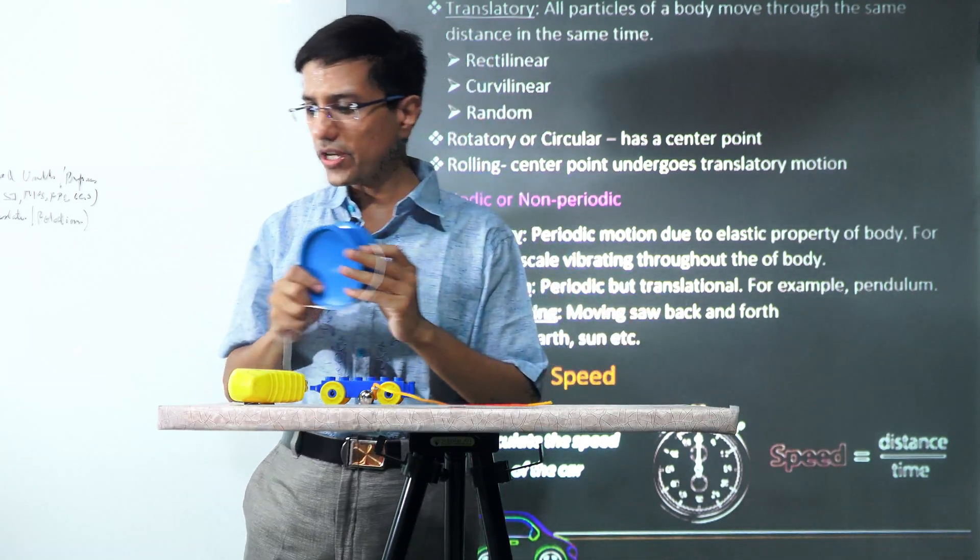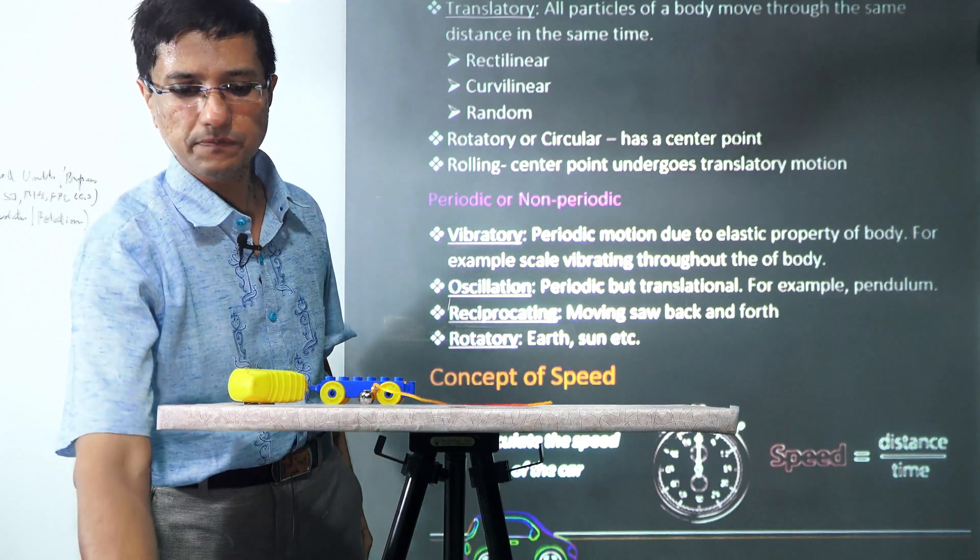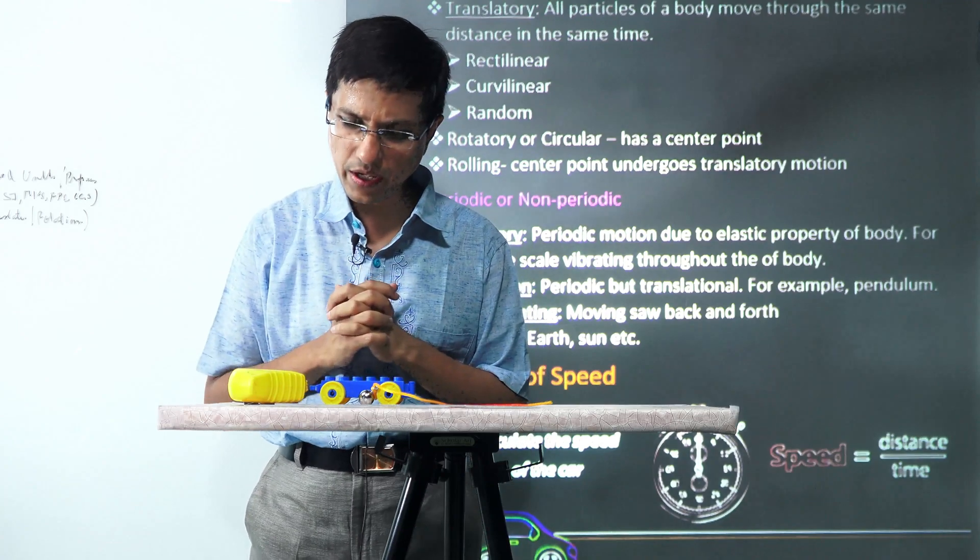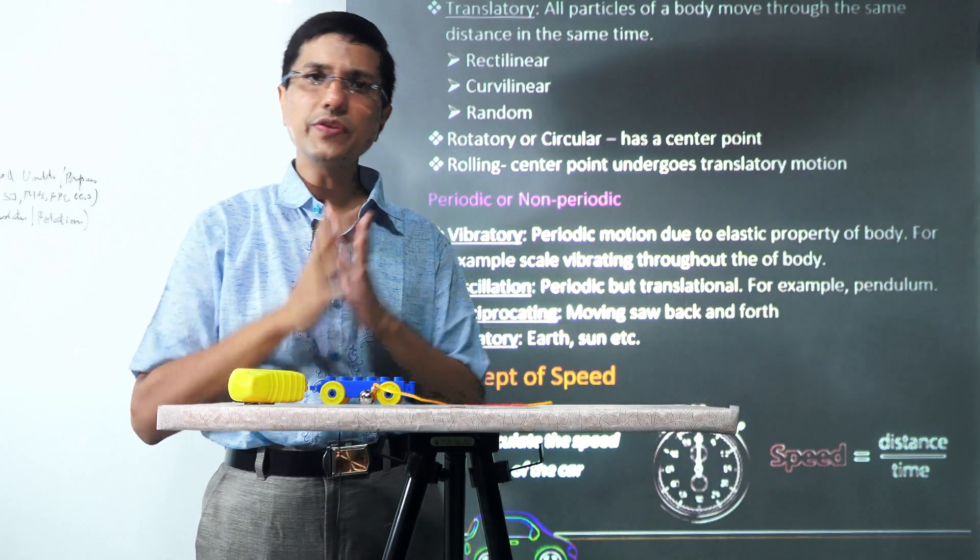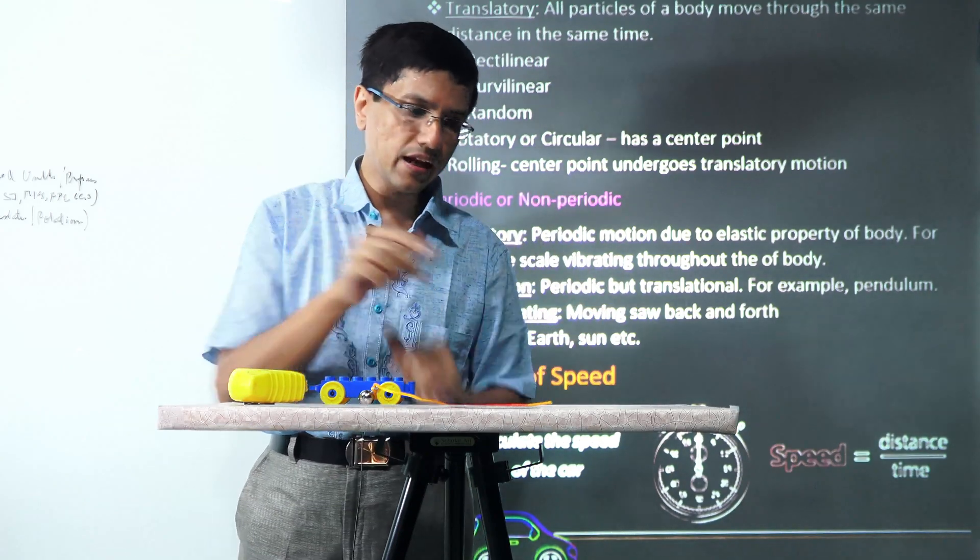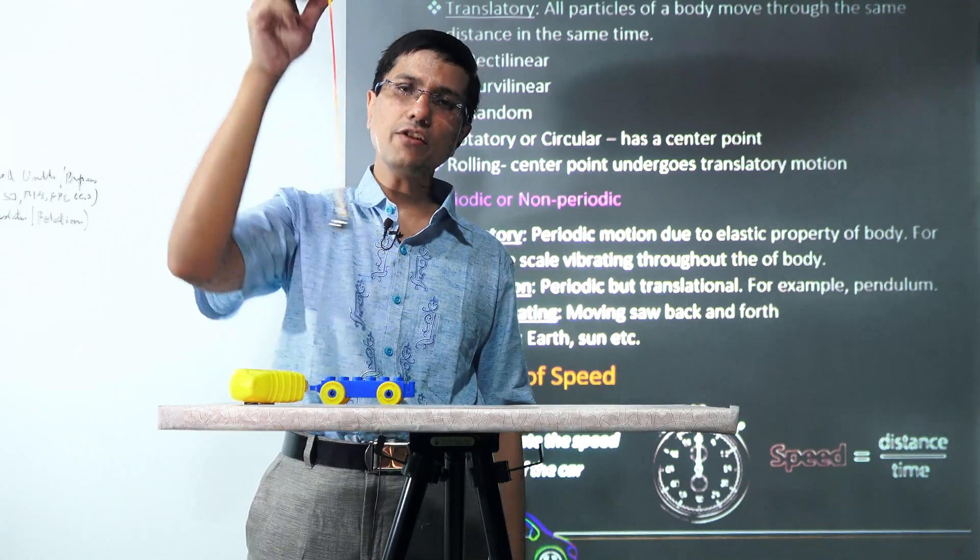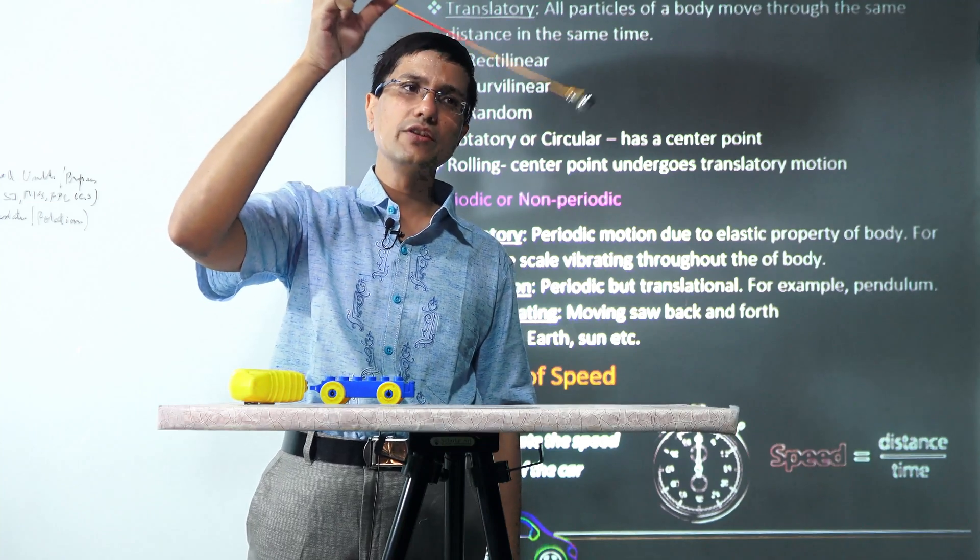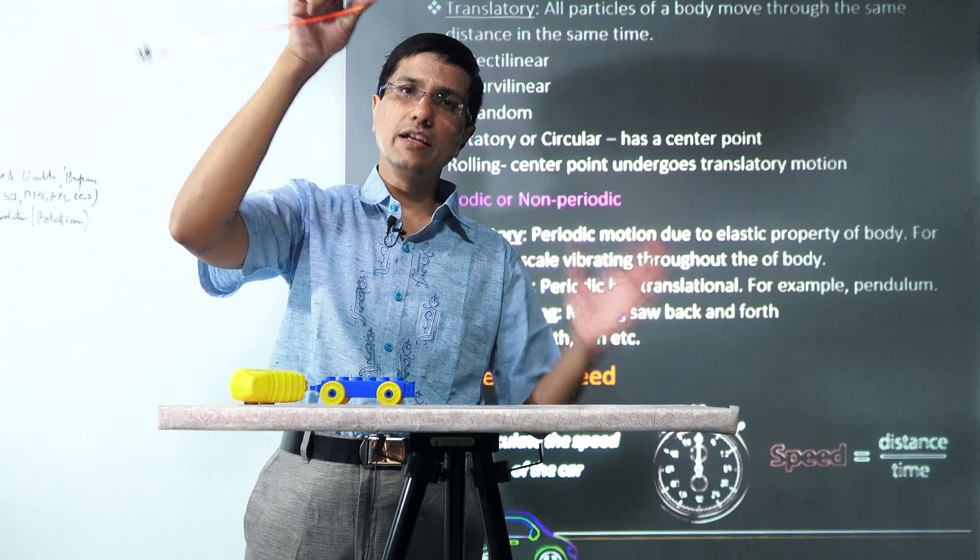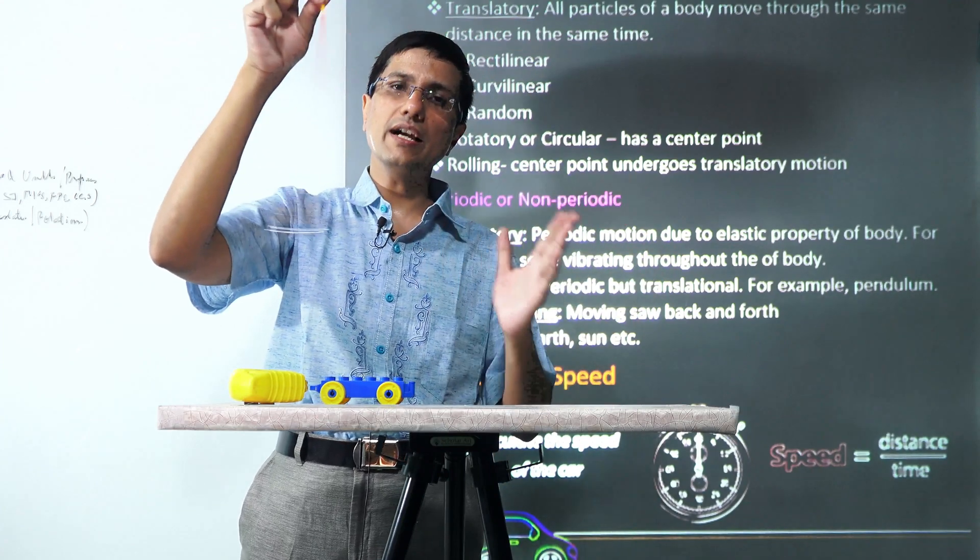Another important classification for motion is whether it is periodic or non-periodic. Periodic motion happens when the same kind of pattern is repeated again and again. A very simple example is that of a pendulum. This pendulum is exhibiting periodic motion. The same motion is repeating again and again.